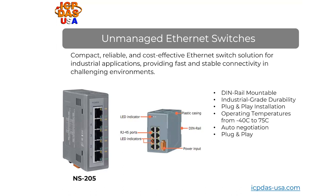Unmanaged switches are simple networking devices that provide basic connectivity without the need for configuration. They're commonly used in small-scale networks or applications like control panels and serve as the central hub for network connectivity. Our unmanaged Ethernet switches like the NS205 have five Ethernet ports, are easy to set up, mount on a DIN rail, and have extended operating temperatures. That operating temperature can be extended further with conformal coating.